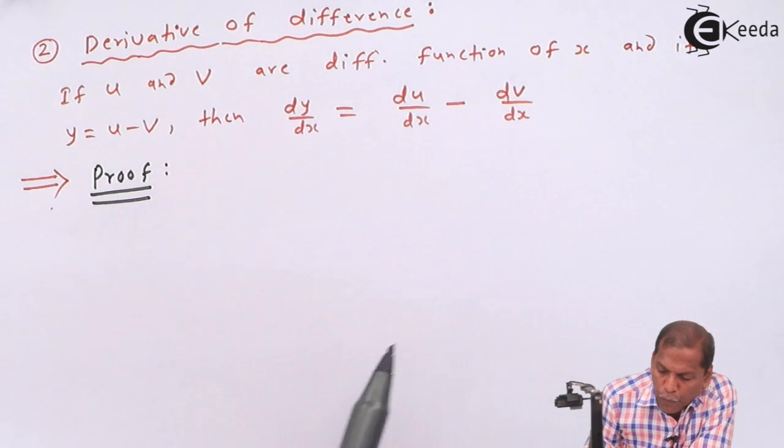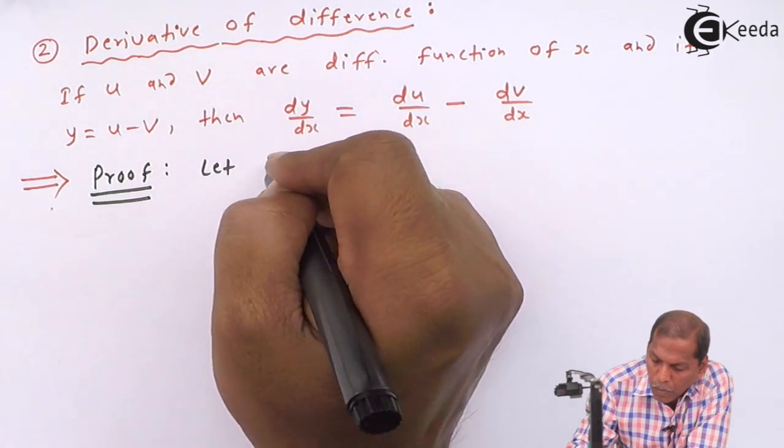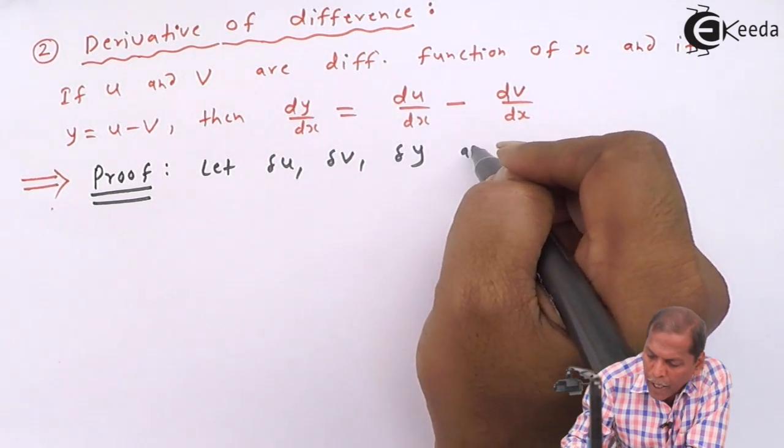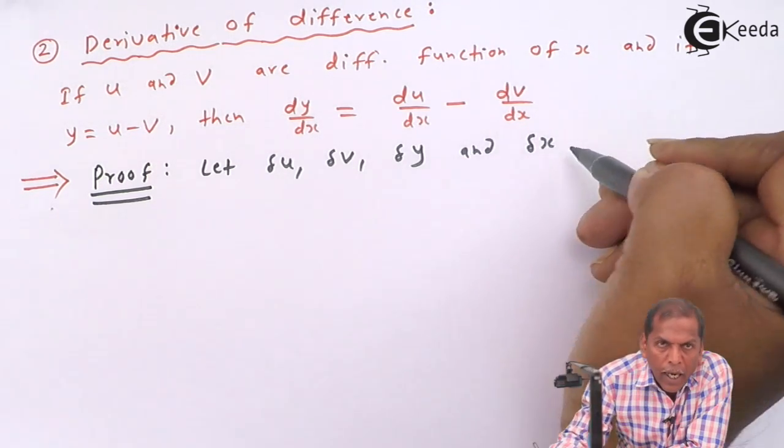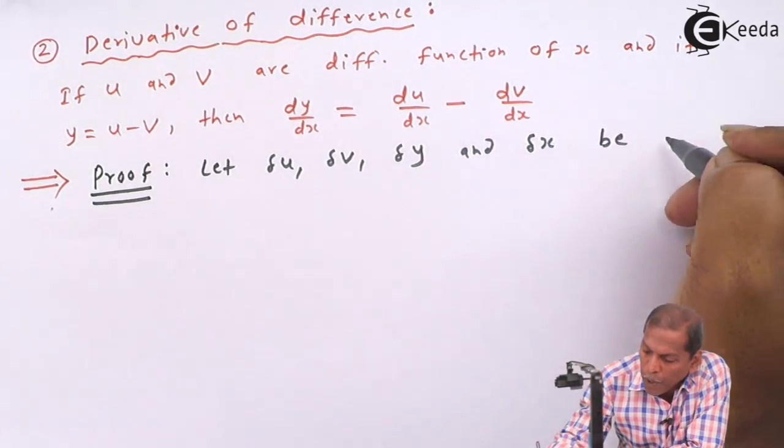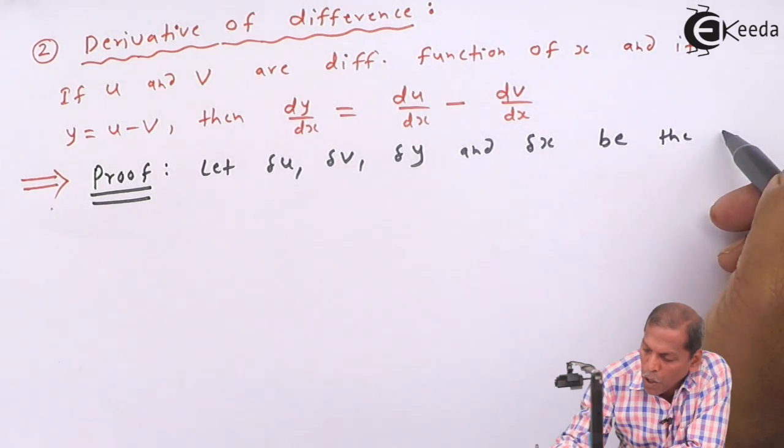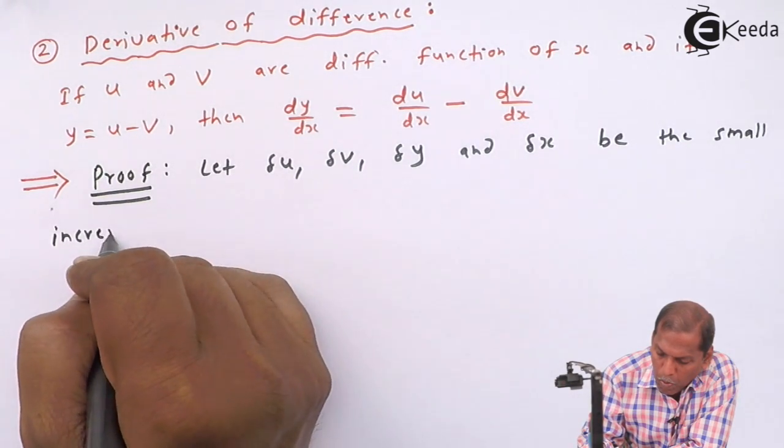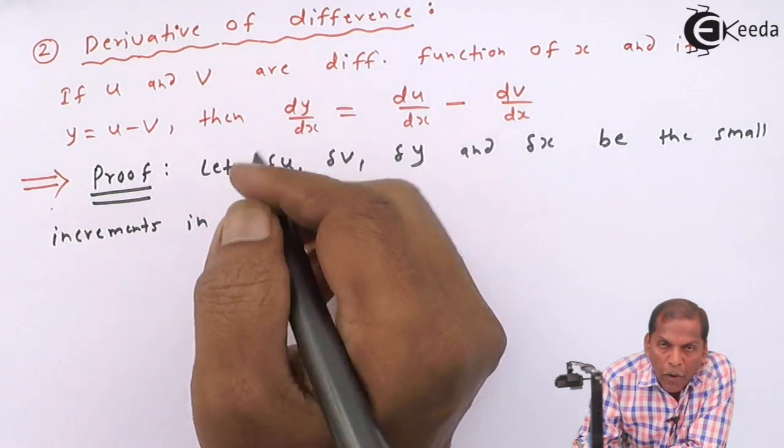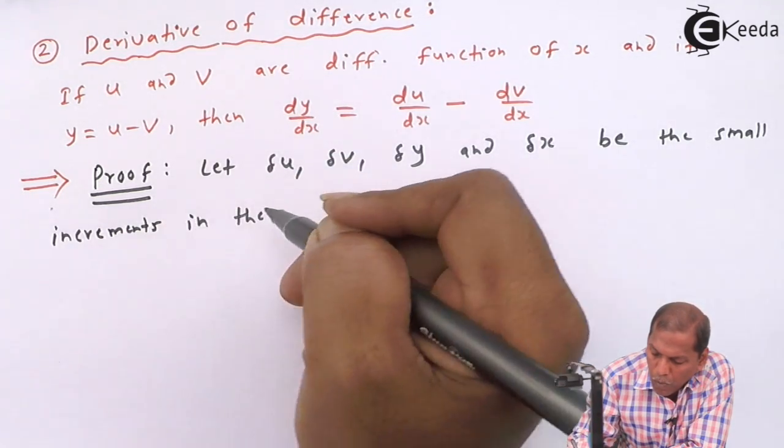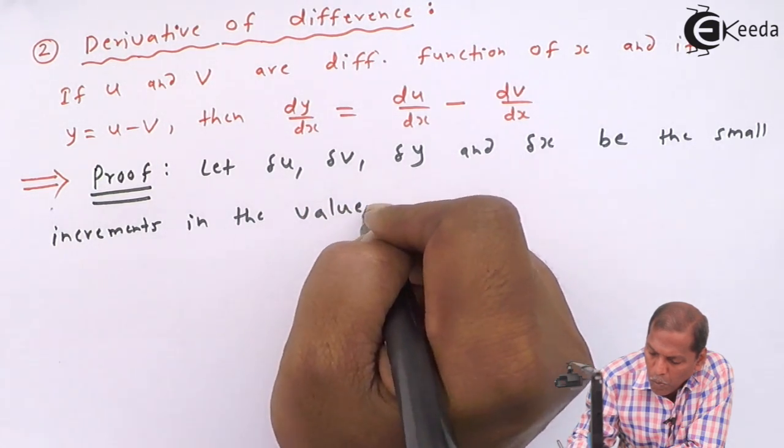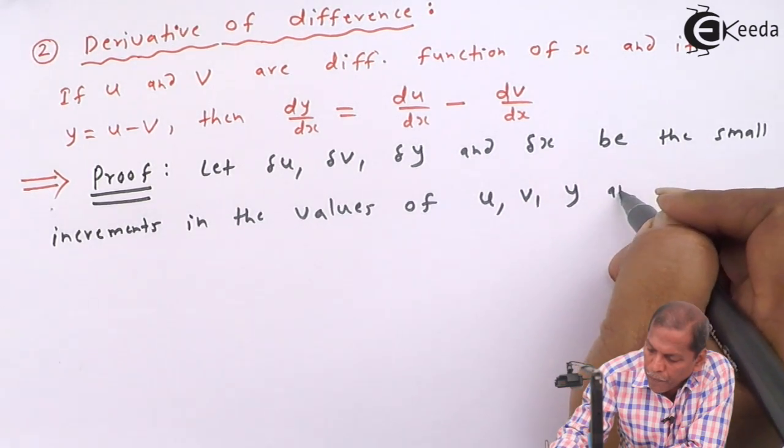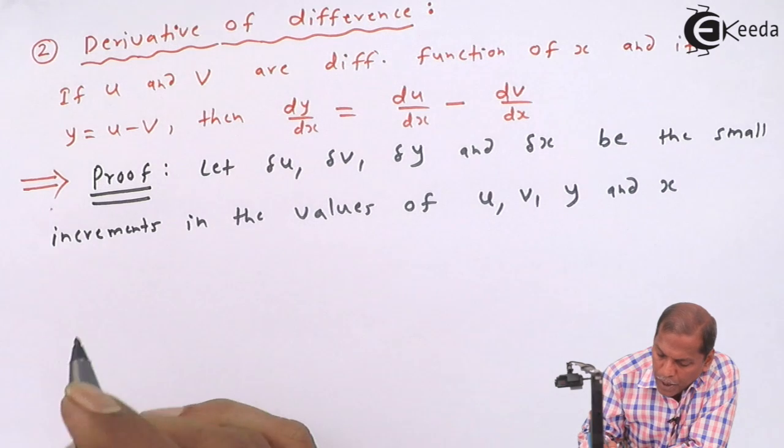Now let's see the proof. First of all, let δu, δv, δy, and δx be the small increments in the values of u, v, y, and x respectively.